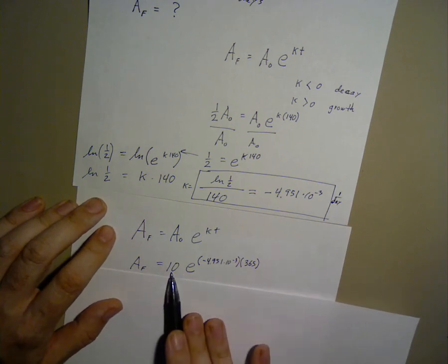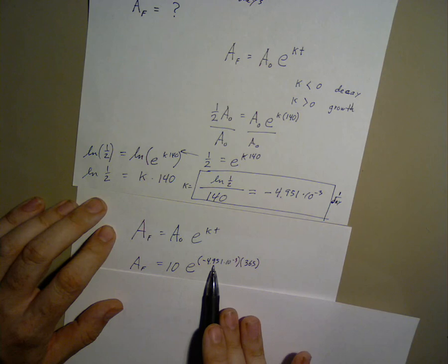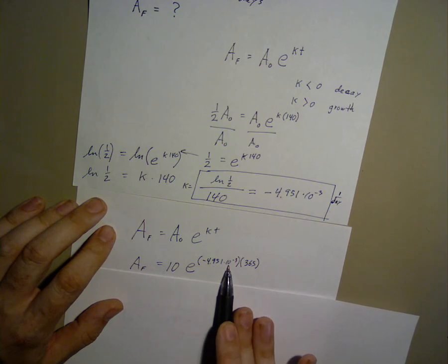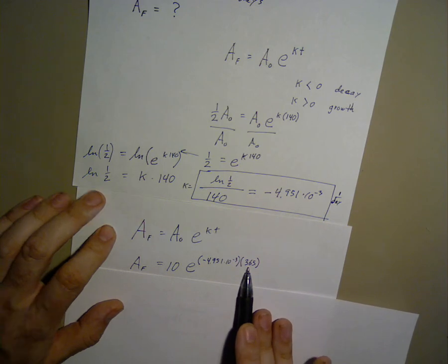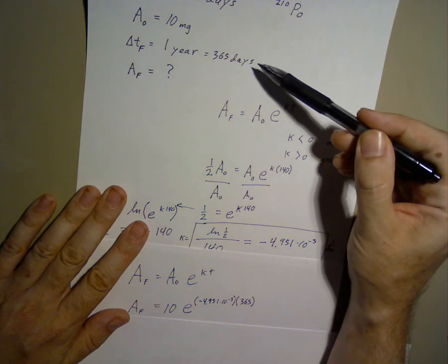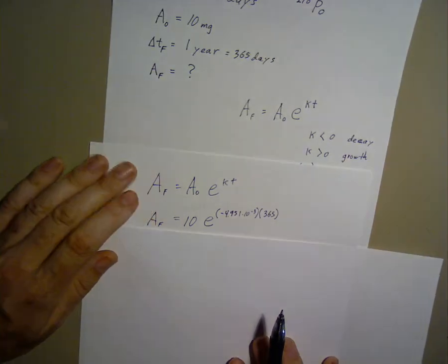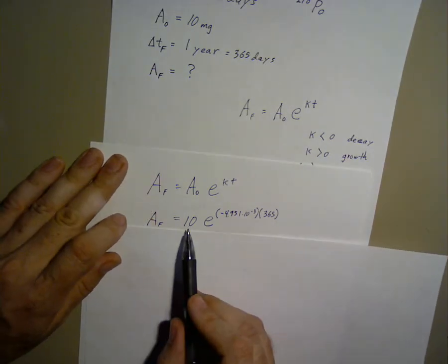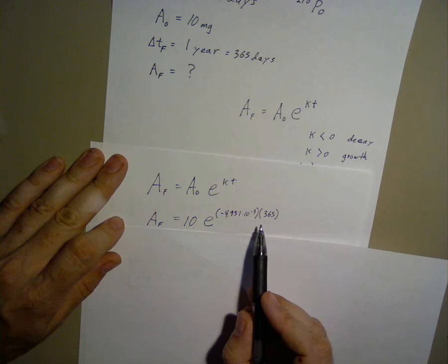A-initial is 10 milligrams. K is negative 4.951 times 10 to the negative third. Our time is now one year, because we needed to solve for how much was left after an entire year. So from here, we can simply solve this in a straightforward fashion.